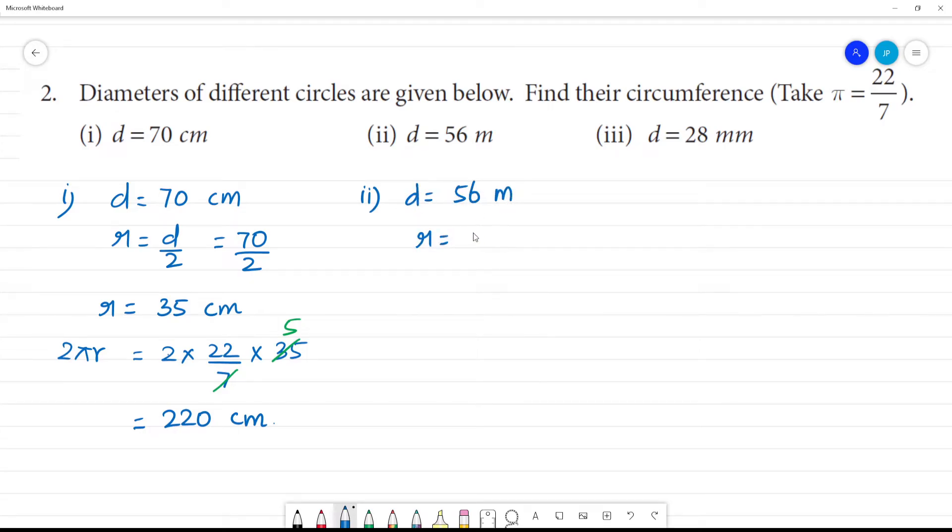Second one, again diameter is equal to 56 meters. Radius is equal to 56 by 2. 2 into 4 remainder 1, 8 into 16. Radius is equal to 28 meters.